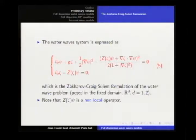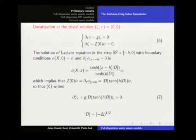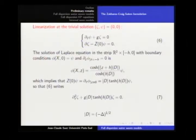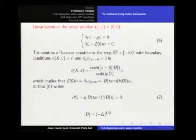Craig and Sulem found the formulation of the water wave system. So zeta is elevation and G(zeta) is a non-local operator, giving the Zakharov-Craig-Sulem formulation. The recipe to derive an asymptotic model is easy: introduce small parameters depending on the regime, expand the Dirichlet-Neumann operator with respect to those small parameters using elliptic techniques. This goes back to Hadamard when he studied the dependence of solutions of elliptic equations with respect to the boundaries. You can do it either formally, as a physicist, or rigorously. If you just linearize the trivial solution, you get a non-local linear operator, and the dispersion relation of the water wave.